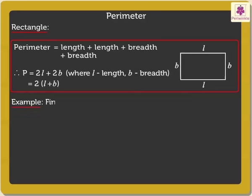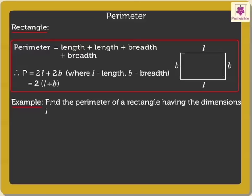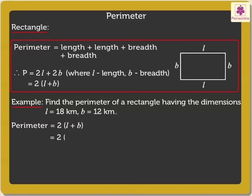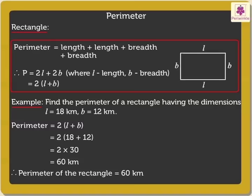Now, let's find the perimeter of a rectangle having the dimensions: length equal to 18 kilometers and breadth equal to 12 kilometers. Using the formula, perimeter of the rectangle is equal to 2 into (18 plus 12), equal to 2 into 30, which is 60 kilometers. Thus, the perimeter of the rectangle is 60 kilometers.